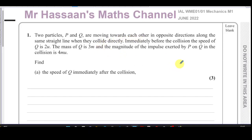Let's start with question number one. Question one is a typical question one from mechanics, about momentum and impulse. Two particles P and Q are moving towards each other in opposite directions along the same straight line when they collide directly. Immediately before the collision, the speed of Q is 2u, the mass of Q is 3m, and the magnitude of the impulse exerted by P on Q in the collision is 4mu. Find part (a) the speed of Q immediately after the collision.